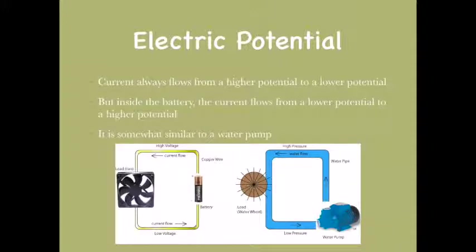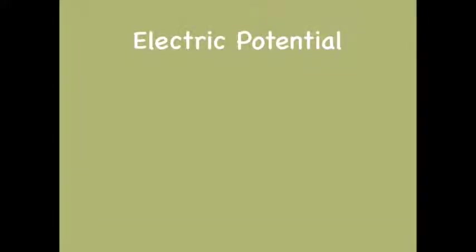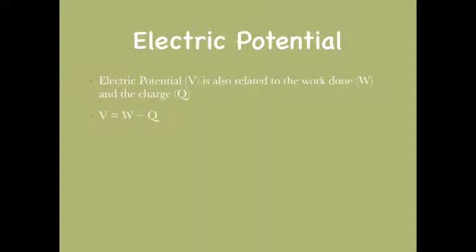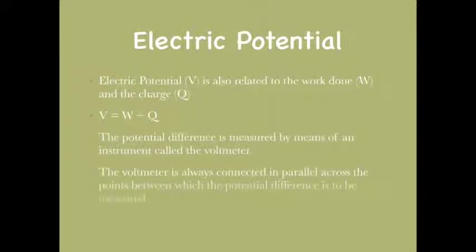The battery does the same job as a water pump, and the water is analogous to current. Electric potential is also related to work done and charge by the formula V equals W divided by Q. Electric potential is measured using an instrument called a voltmeter, which is always connected in parallel across the points between which the potential difference is to be measured.